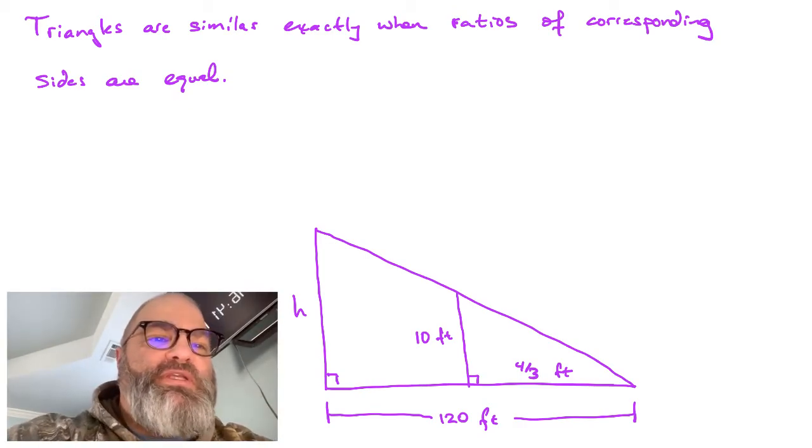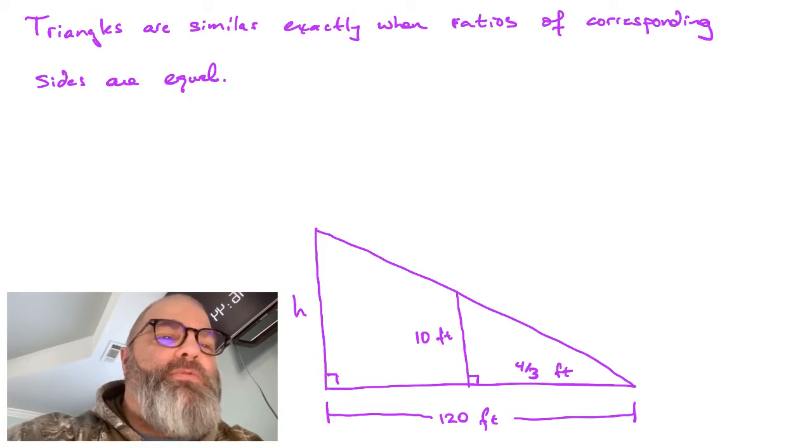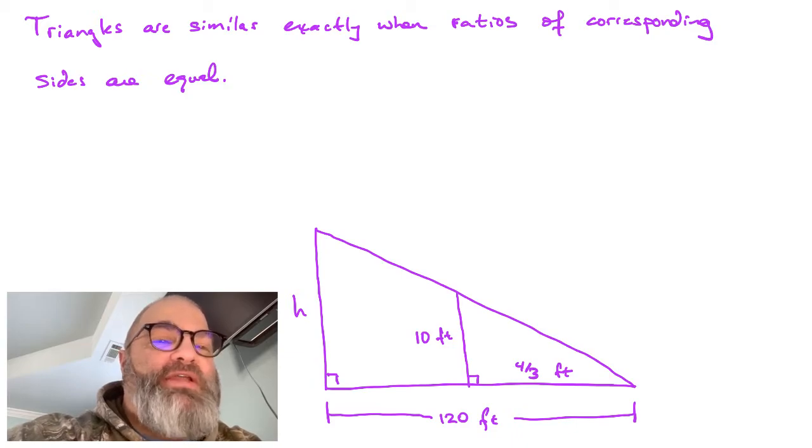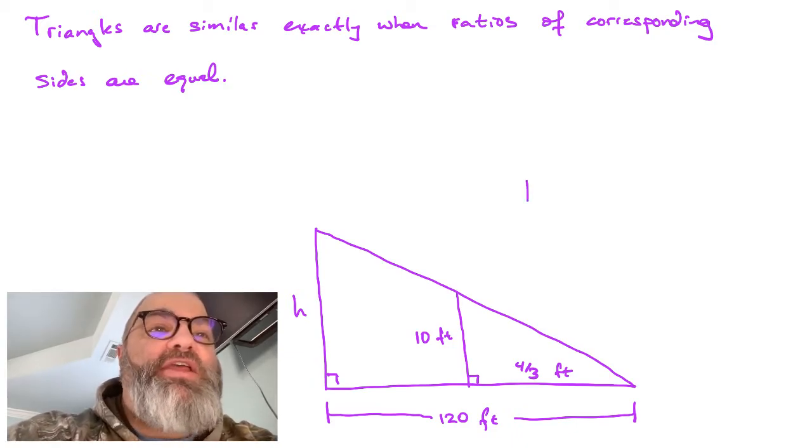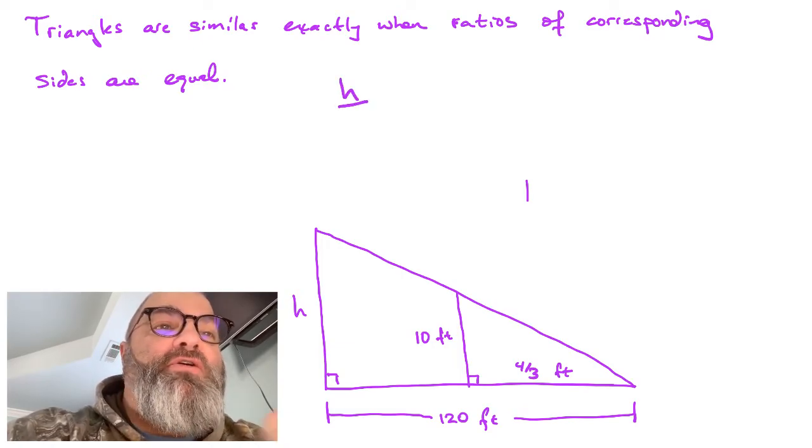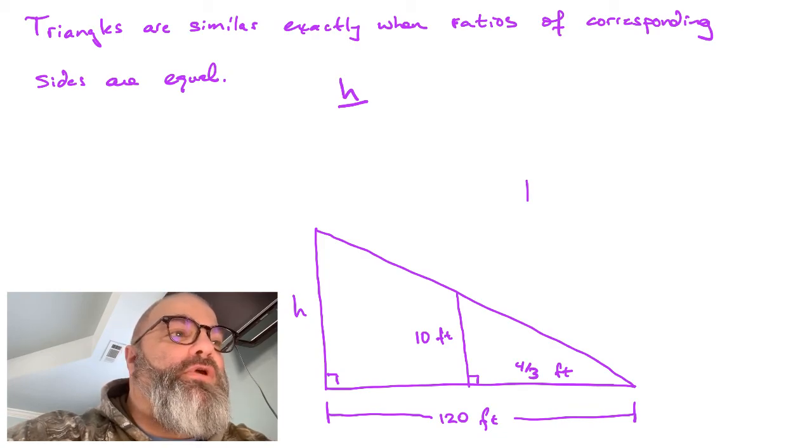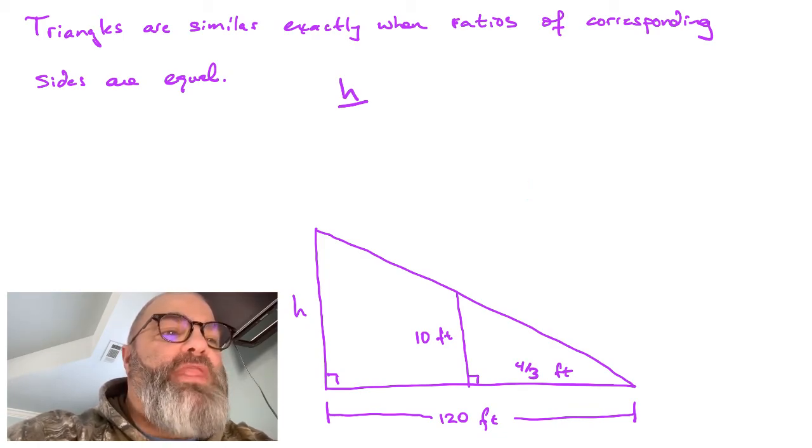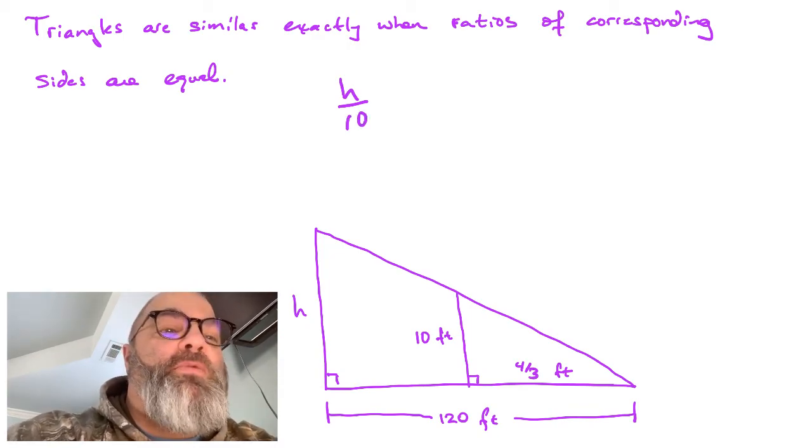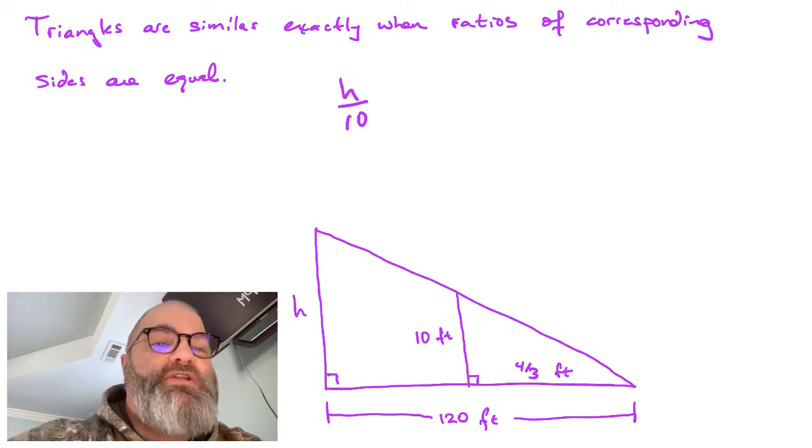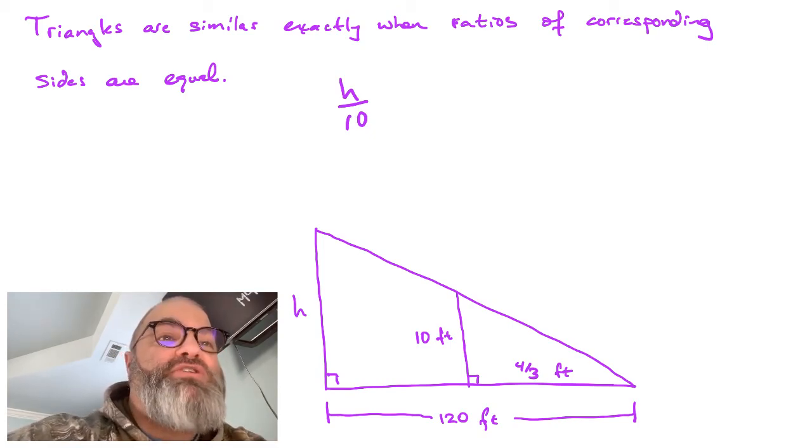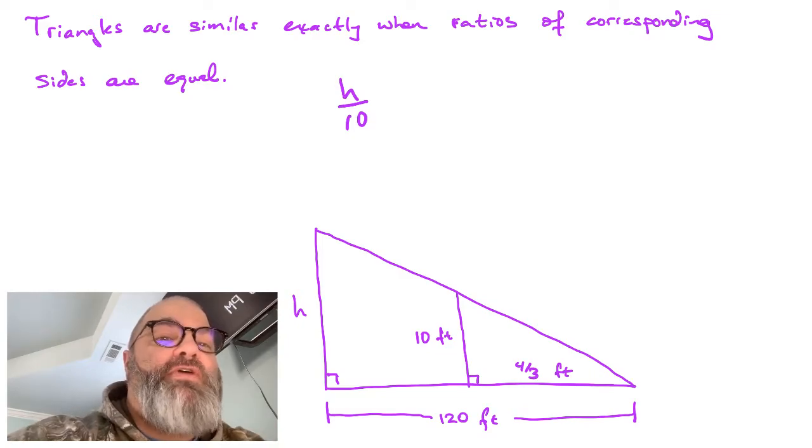For corresponding sides, we're looking at when we've got them oriented exactly as we have here. Corresponding sides are easy to see that we have this vertical side H for the big triangle. And then we look at the vertical side for the smaller triangle. That smaller triangle is going to have a value of 10 feet. So we've got a ratio, meaning we're making it a fraction. We look at the big triangle value over the small triangle value.